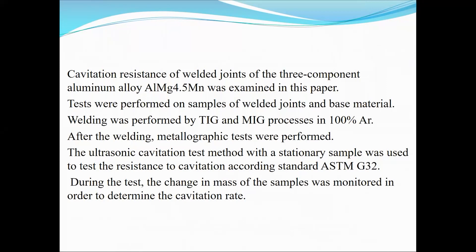That means weld metal and base metal — we will not consider heat affected zone on this occasion. It is a three-component aluminum alloy, one of the most used alloys with magnesium and manganese. Tests were performed on welded joints, meaning weld metal and base metal, and results were compared.